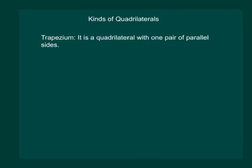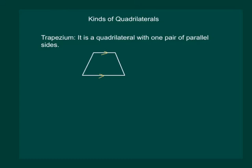We already know that square and rectangle are kinds of quadrilaterals. Let us now study another kind of quadrilateral called trapezium. It is a quadrilateral with one pair of parallel sides. Look at this figure — it has only one pair of parallel sides, hence it is a trapezium. We can put arrow marks to indicate parallel lines.